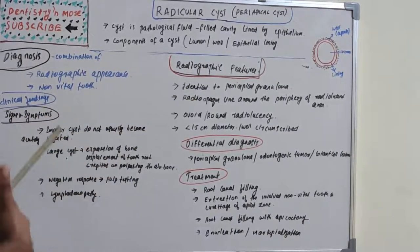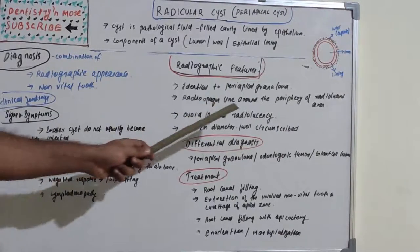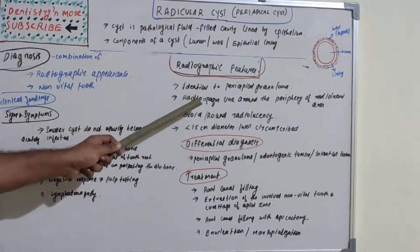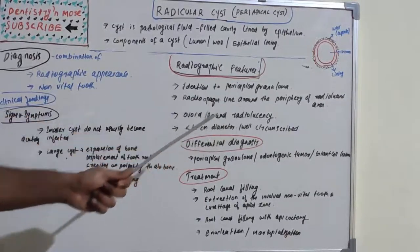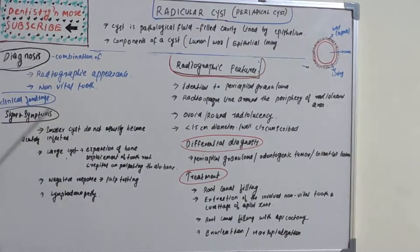Radiographically, radicular cyst is most commonly identical in appearance to periapical granuloma. There will be a radiopaque line around the periphery of a radiolucent area — a well-defined, round radiolucency surrounded by a radiopaque border. The diameter is mostly less than 1.5 centimeters and it is a well-circumscribed lesion.